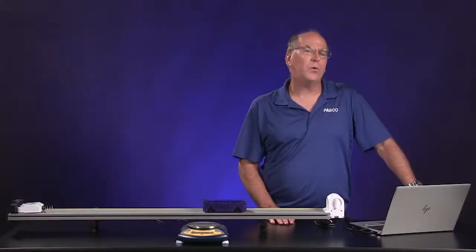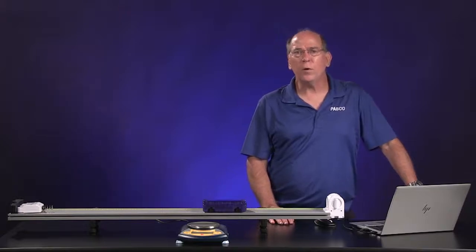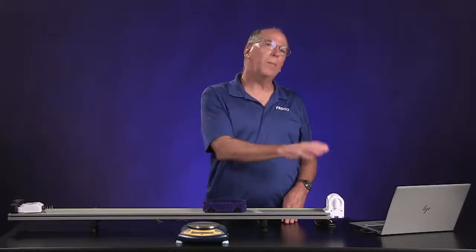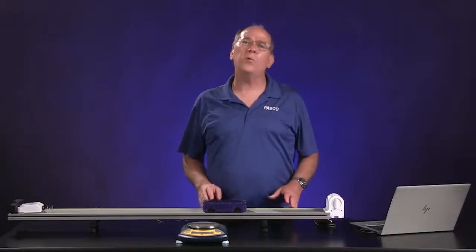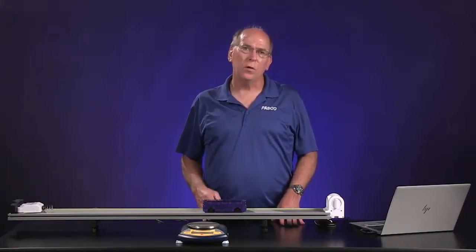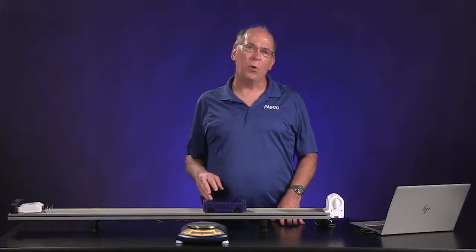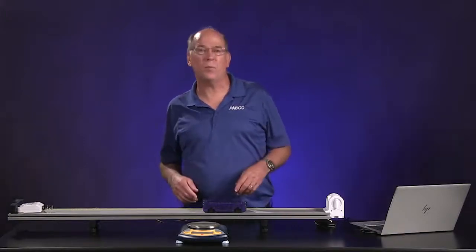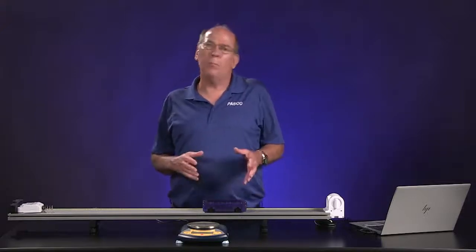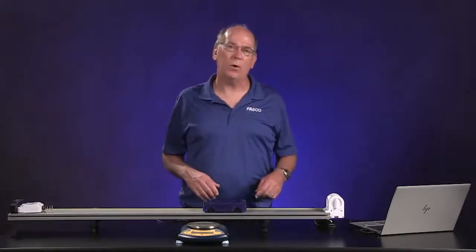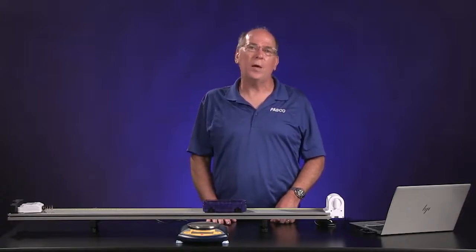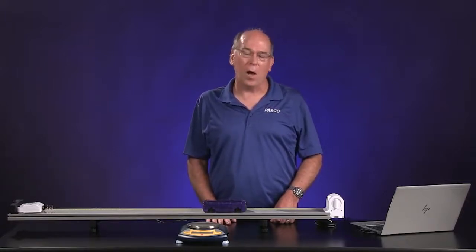Notice the impulse is positive. The coordinate system used by the force sensor is opposite that used by the motion sensor. There are multiple ways to handle this. The change in velocity and the impulse are in the same direction and must have the same sign though. So you can make them both negative or make them both positive. Since it might be easier to deal with positive numbers, the lab handout suggests you make them both positive.